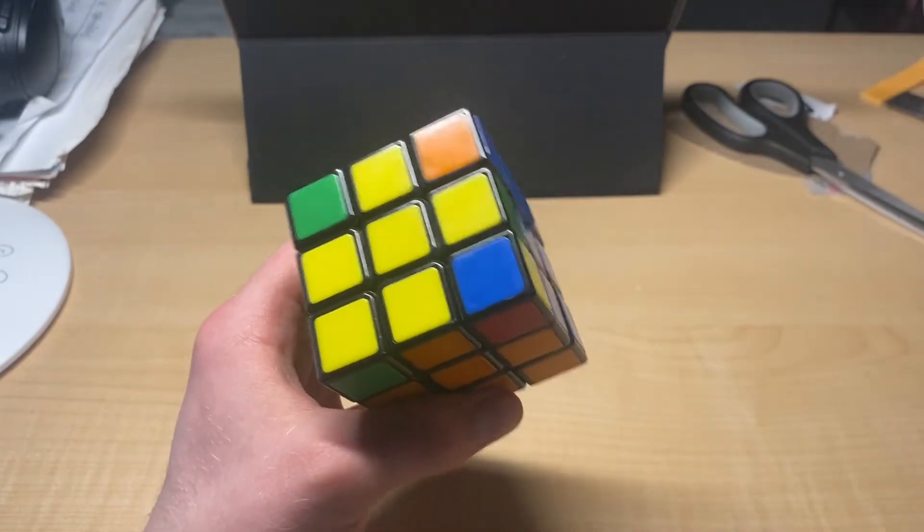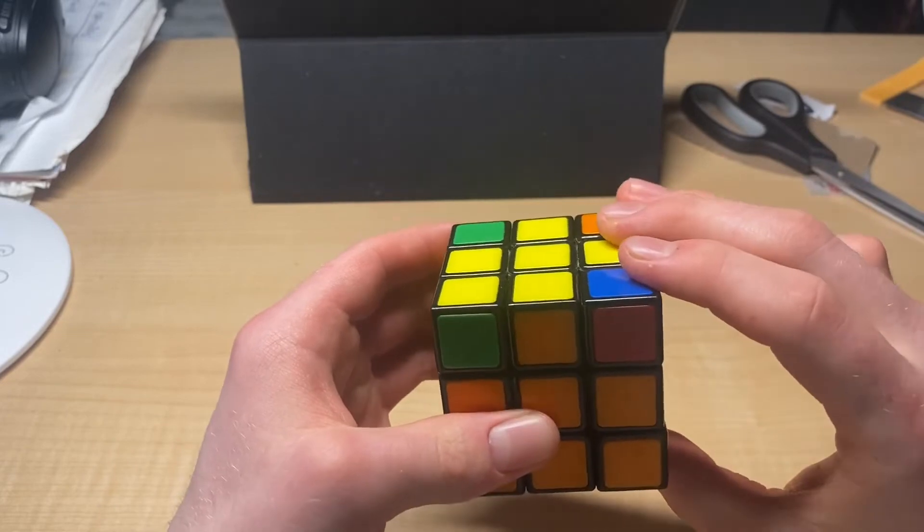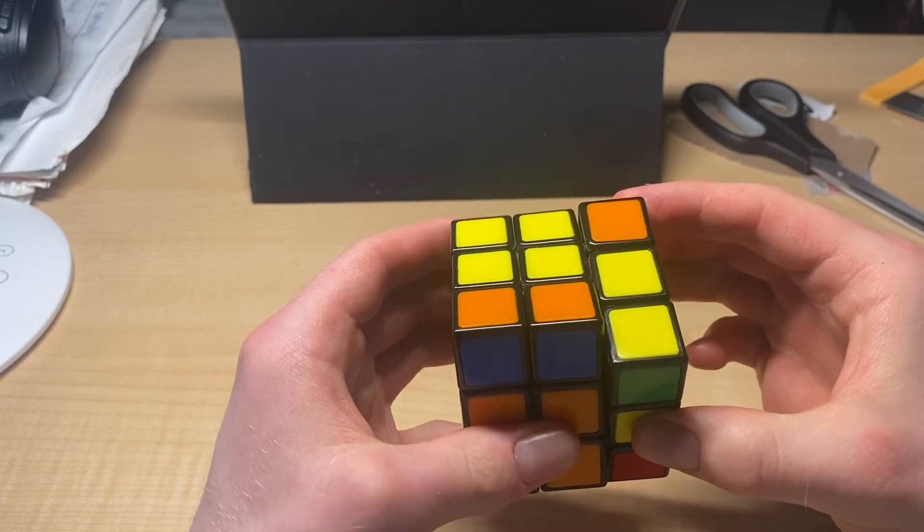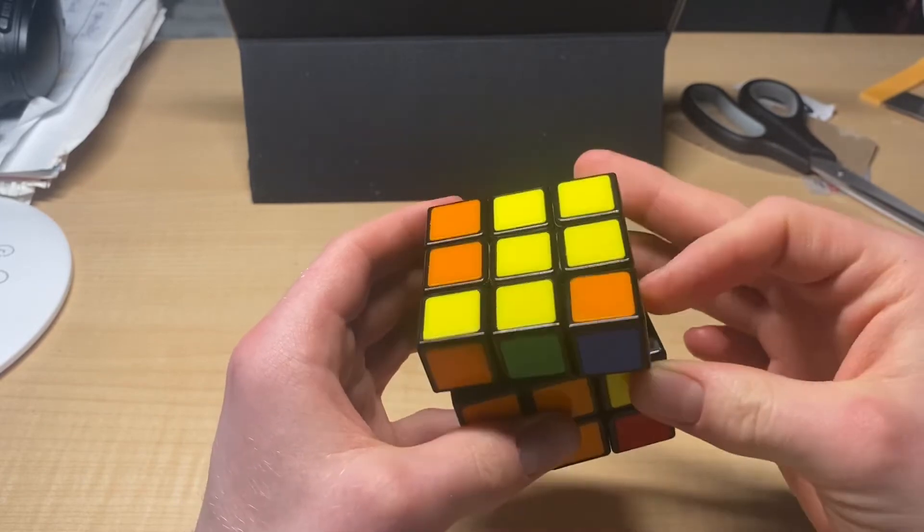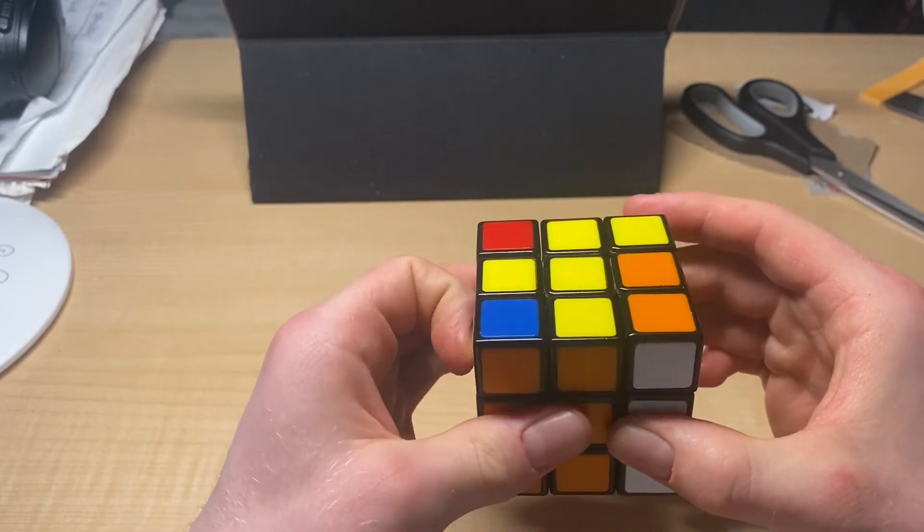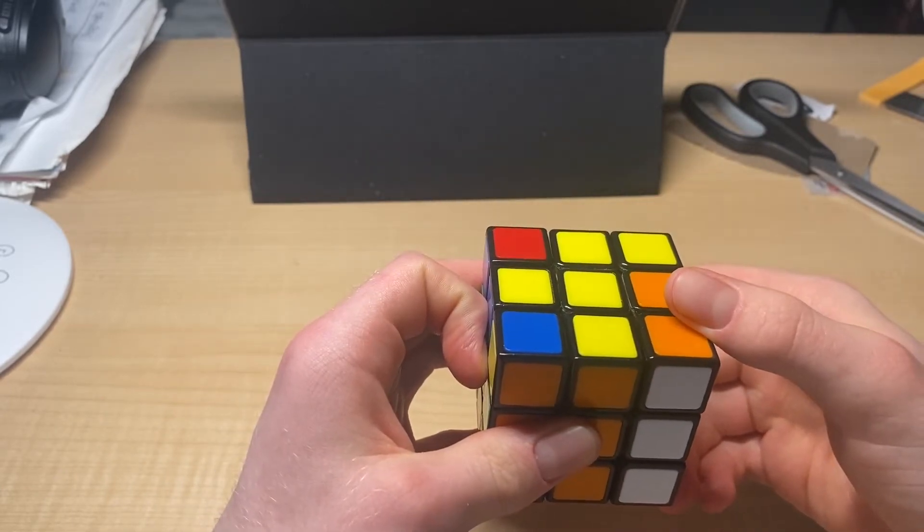And you'll know it's sun because right here, the yellow will be facing you, not to the side. So what you're going to do is R, U, R prime, U, R, U2, R prime.